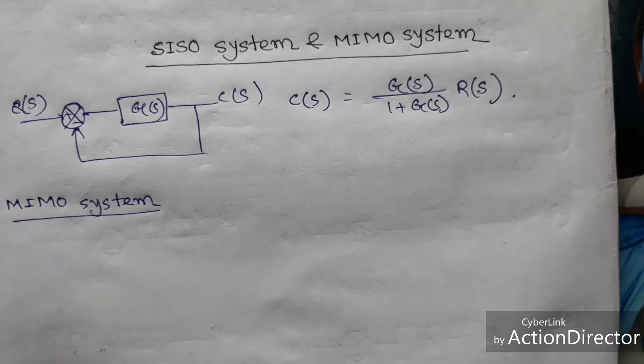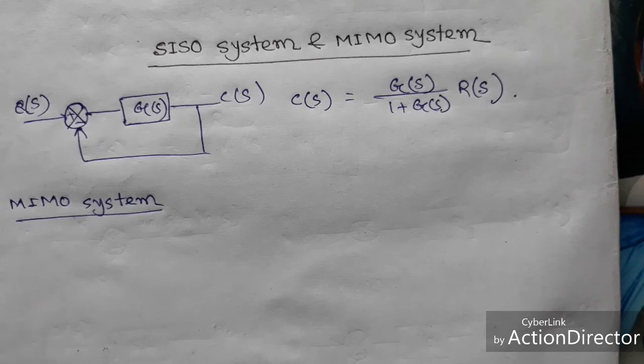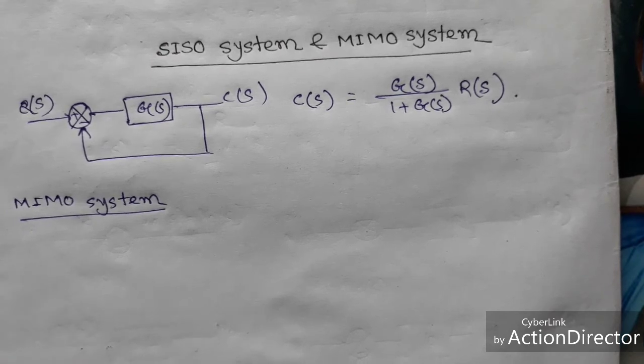And when we get the output, the output can be adding effect of two inputs because this is MIMO system. In case of SISO system we have only one input, but in MIMO system the output will be adding effect of two inputs.